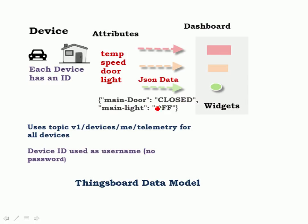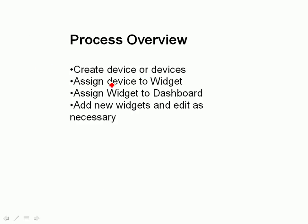Devices send those attributes or that data to the dashboard enclosed as JSON data. You can see an example here — the main door is closed and the main light is off. You map those data attributes to widgets. There are various types of widgets you can have: card widgets for the main lights and the main door, and a gauge-type widget for temperature. These widgets are placed on a dashboard. The process is: create the device, assign the device to the widget, assign the widgets to the dashboard, then add and edit widgets as necessary.